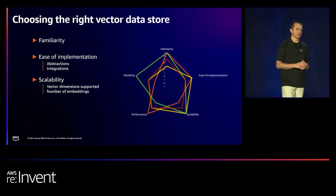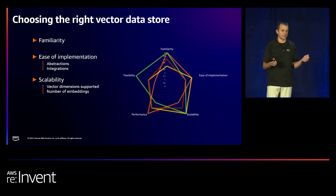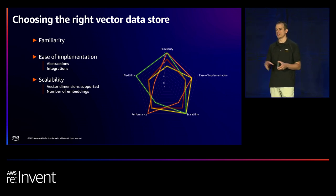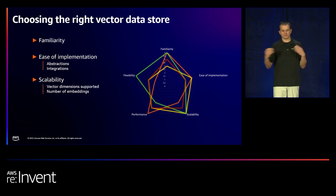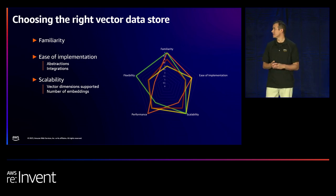Ease of implementation is another criterion with two pieces: abstractions — how well does the database abstract away vector complexity — and integrations with other services. Scalability is also critical. For vectors specifically, consider vector dimensions — how many are supported — and the number of embeddings the data store can support. There's also a curse of dimensionality where beyond a certain number of dimensions, you're not gaining more accuracy and may actually detract from effectiveness.